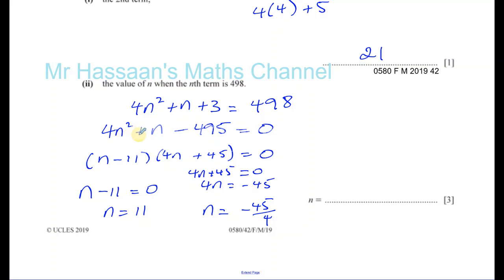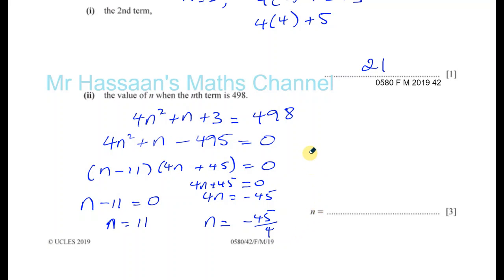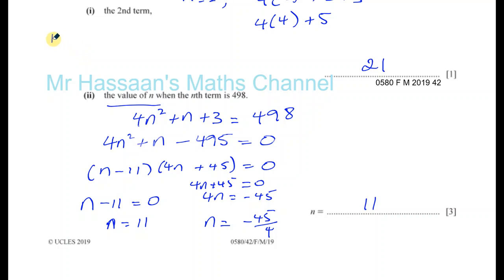So we have n equals 11 and n equals negative 45 over 4. Of course, n must be an integer and must be positive — since n represents the position of a term in the sequence, and positions start at 1. You don't have a 1.5th entry; it's the first, second, third, fourth entry. So the negative fraction answer is excluded, and the answer is n equals 11.